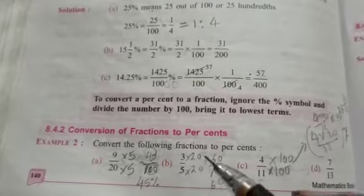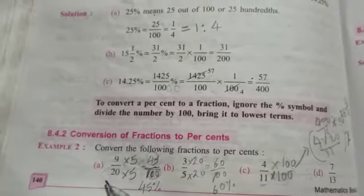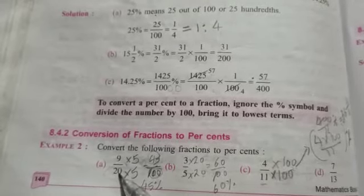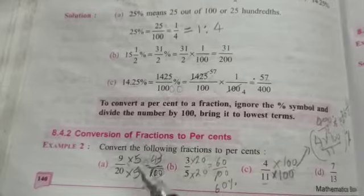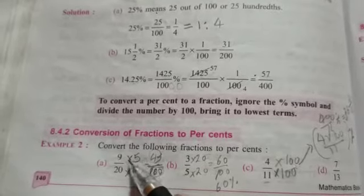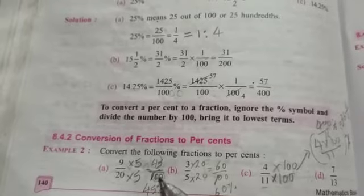The second method: convert the denominator to 100. To convert 20 into 100, we must multiply by 5. So the numerator also multiplies by 5, giving 45/100. Remove the 100 to convert this to percentage - it will be 45%.